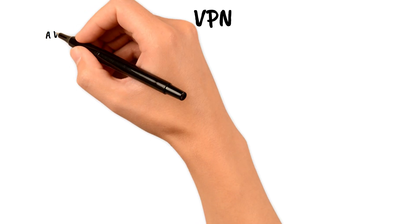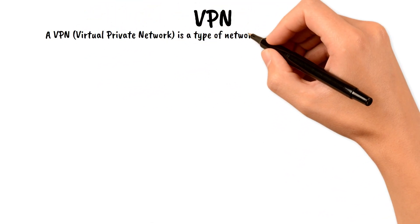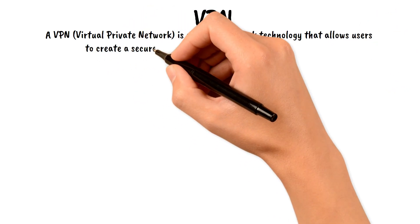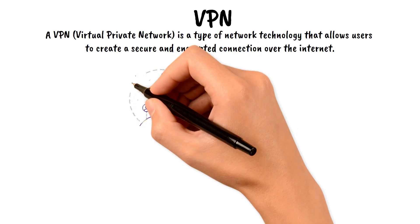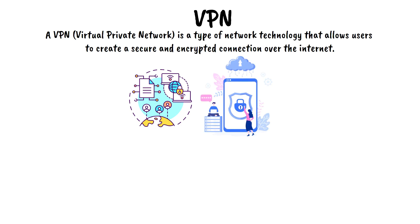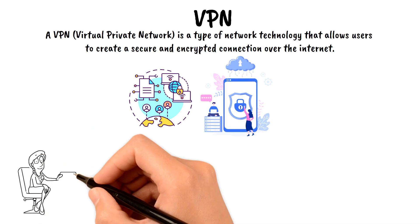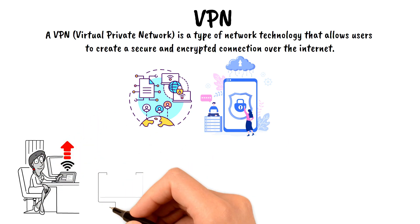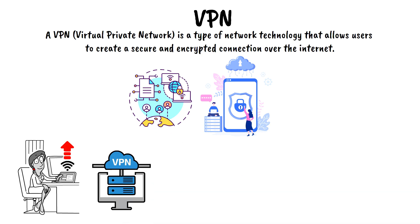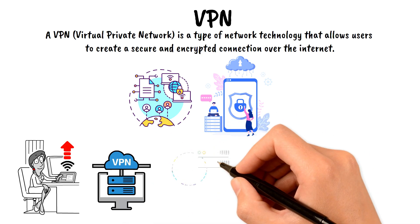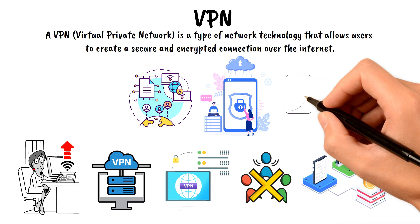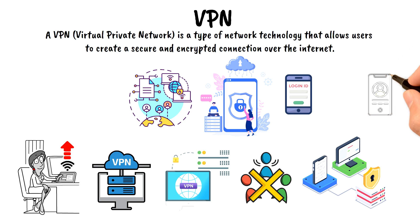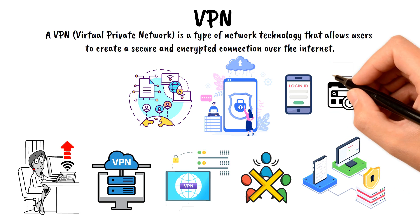A VPN (Virtual Private Network) is a type of network technology that allows users to create a secure and encrypted connection over the internet. It essentially creates a private network that can be accessed remotely, providing a secure and encrypted connection for users to access the internet. When a user connects to a VPN, their device creates a secure and encrypted tunnel between their device and the VPN server, and all internet traffic is encrypted and protected from interception by third parties, hiding data such as login credentials, personal information, or browsing history from prying eyes.